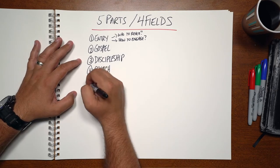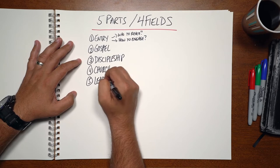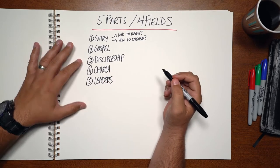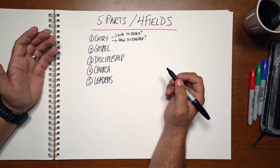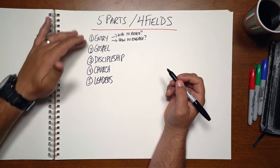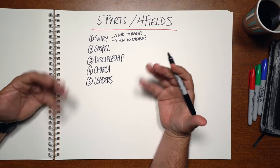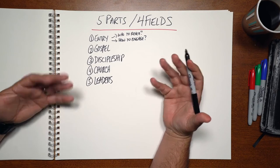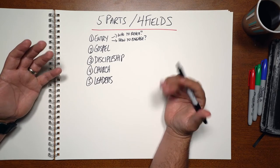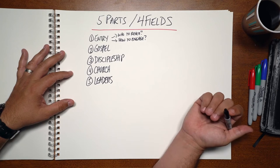And lastly, he had a plan for reproducing leaders — how do we identify and develop leaders so we can see this whole thing reproduce? Each one of these parts needs to be biblical, but also simple enough so that it can reproduce and we can see multiplication to four generations and beyond.